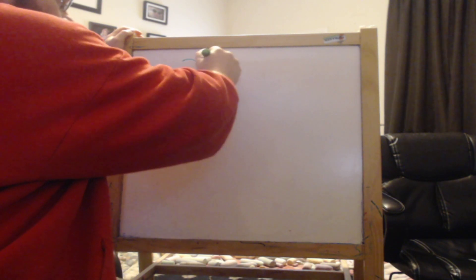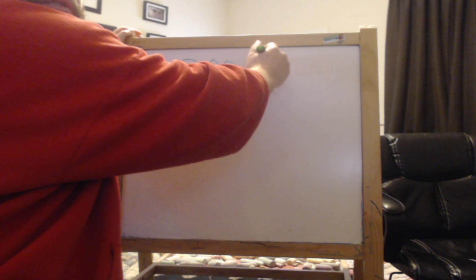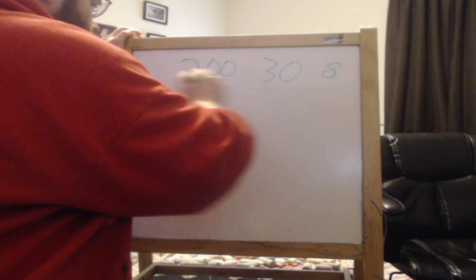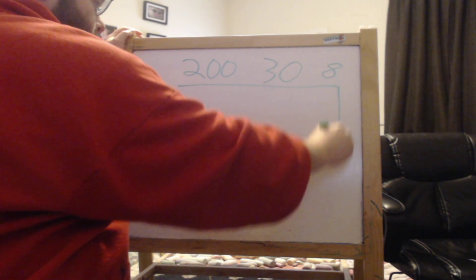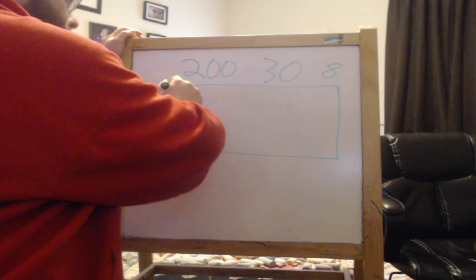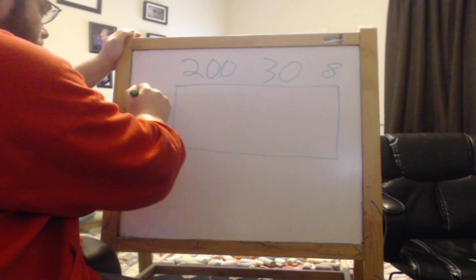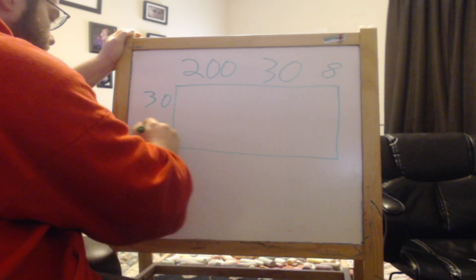So we split it up: 200, 30, 8, and 4... 238. And then 30 and 2.